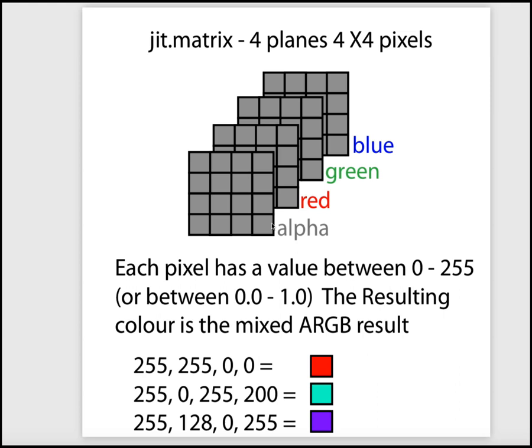If we take a pixel and represent it as a single color, we need an alpha value. So let's take 255, 255, 0, and 0 — this gives us red, so the pixel appears red. The next one: 255, 0, 255, and 200 gives a different color. And 255, 128, 0, and 255 gives another color. So the four values — alpha, red, green, blue — define the color of each pixel.